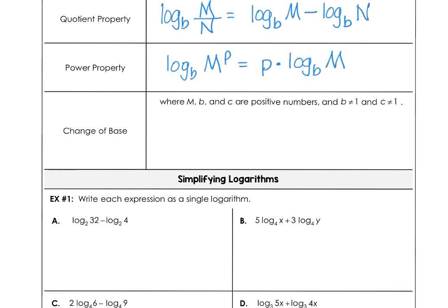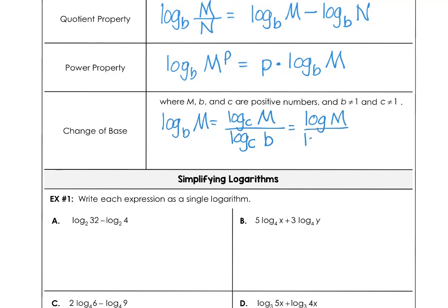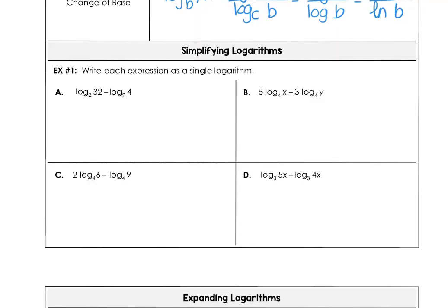Long ago, before there were calculators, we could use the change of base formula and look up logarithms from tables. But now that we have calculators, we can take log base b of m and use any base c: log base c of m divided by log base c of b. You can also use log base 10 of m over log base 10 of b, or natural log of m divided by natural log of b — all of them calculate the same value. We'll see some examples of that soon.